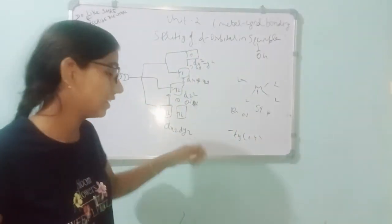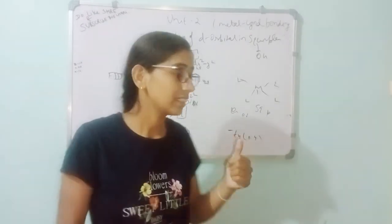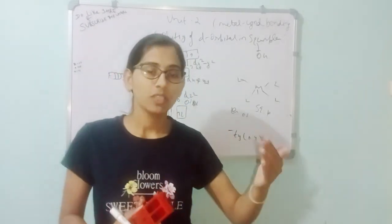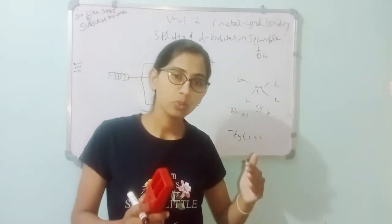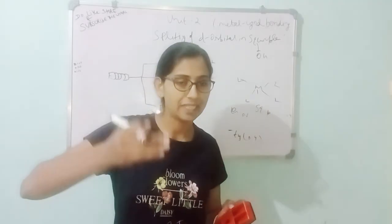The lowest energy orbitals in square planar splitting are dxz and dyz, which are degenerate — these two orbitals are at the bottom. The order of splitting from lowest to highest energy is: dxz and dyz, then dz squared, then dxy, and finally dx squared minus y squared at the top.